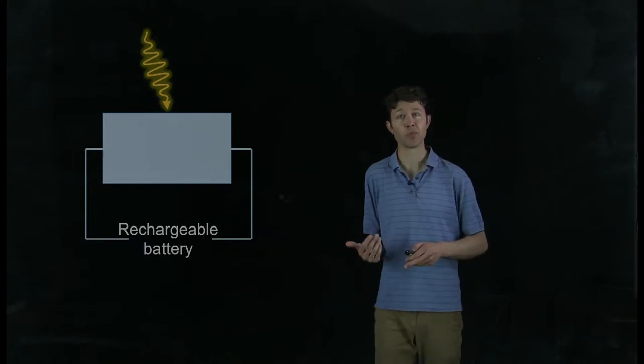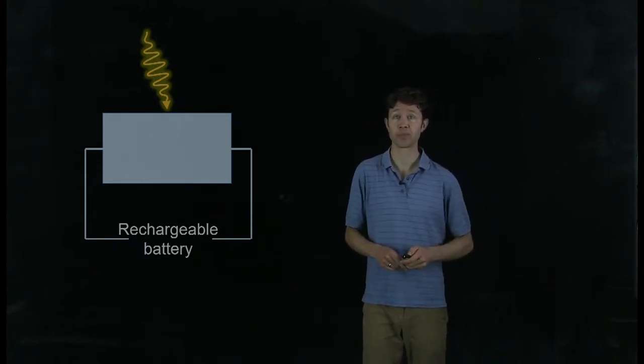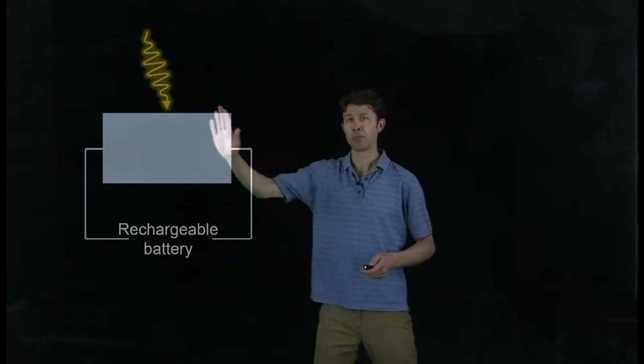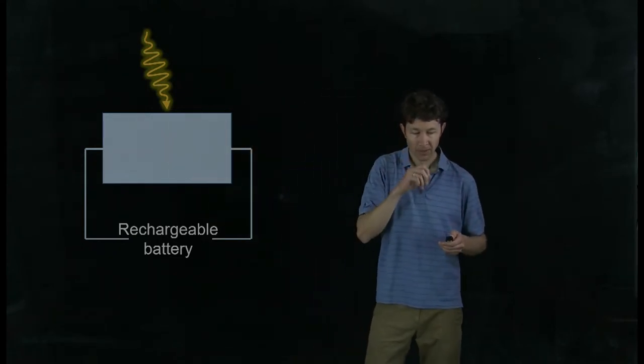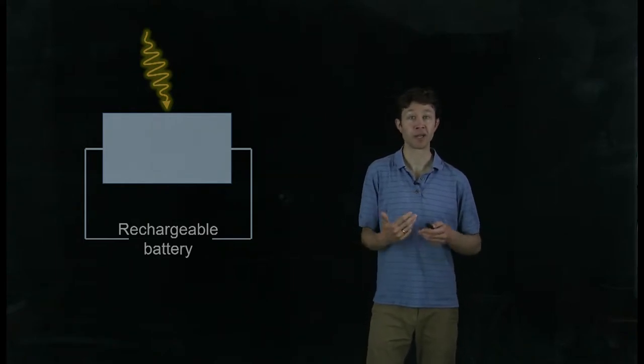To answer that question, we should look in more detail about the assumptions that are made in the Shockley-Queisser calculation. This black box represents any of the materials I showed you before: silicon, gallium arsenide, and all the others.